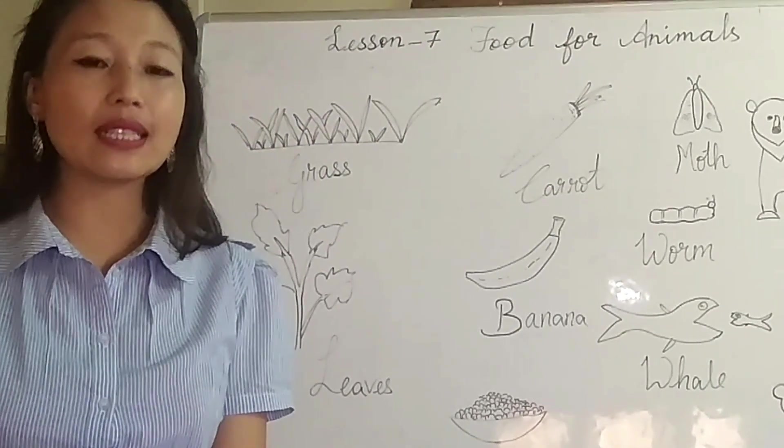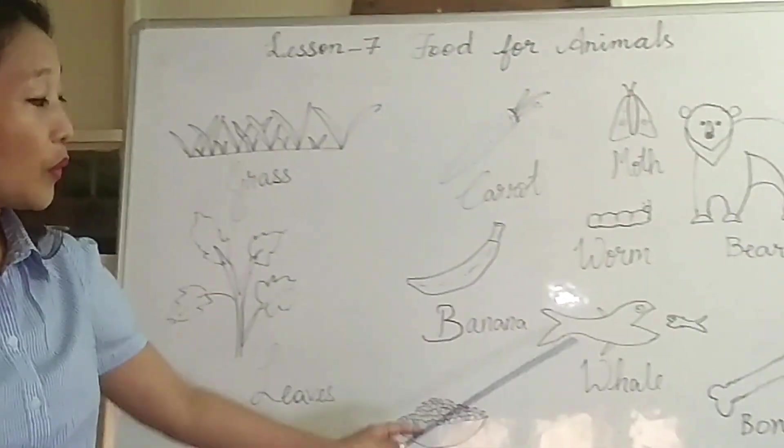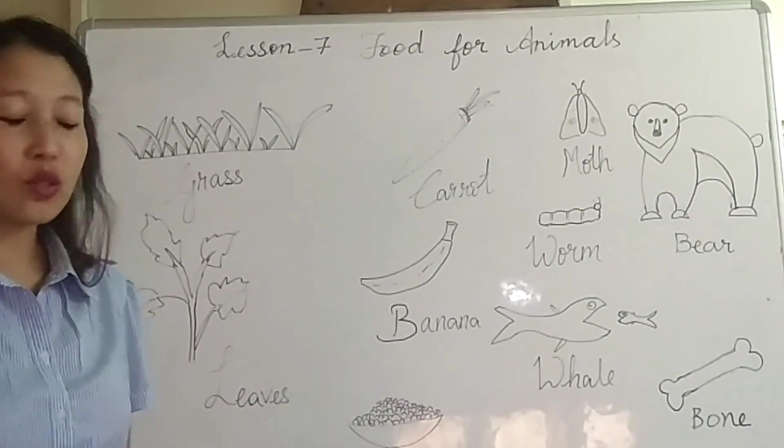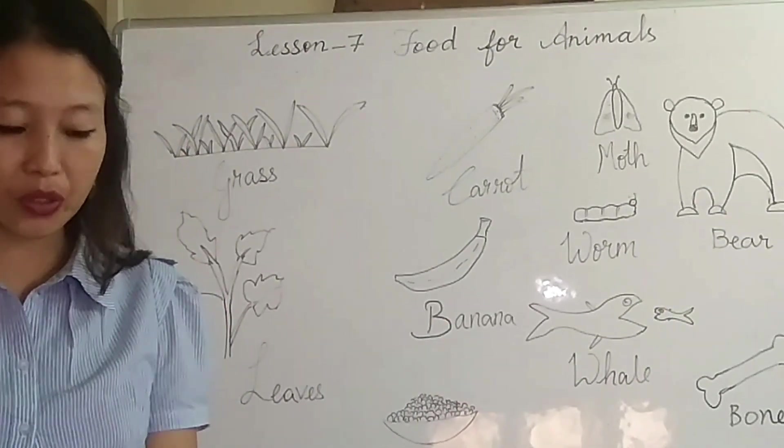A kingfisher catches fish from ponds and seas and eats them as food. You see a whale here, and as well as big fishes, they catch small fish and eat them as their food.